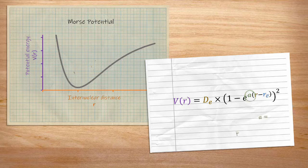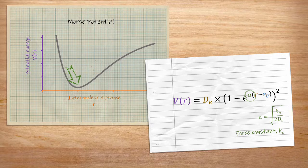The A term is related to the force constant at the bottom of the potential well. Because the potential energy well here is asymmetrical, the force constant isn't exactly constant, so it applies to this point only.